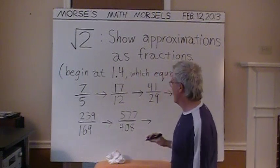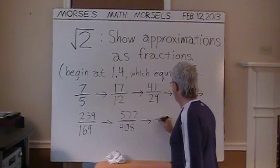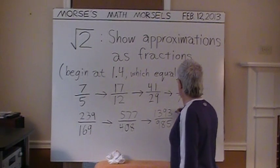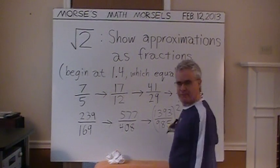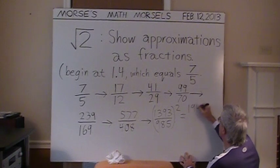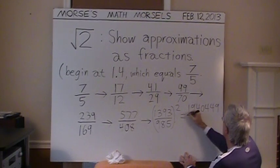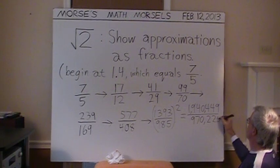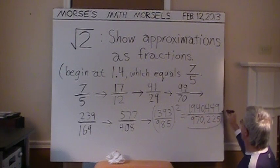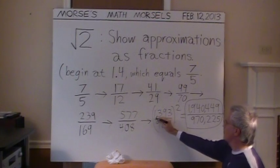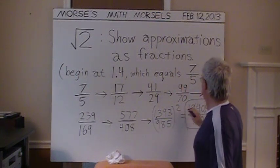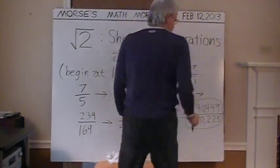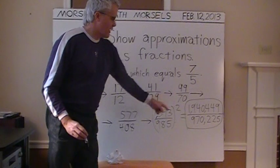Here's the next fraction. I'm just going to do one more to keep all the numbers manageable and under four digits. That's going to be a 985 there, and this is going to be a 1393 up there. If we square this thing, we'll get 1940449 over 970225. Now this is really close to 2. 1393 over 985 is really close to the square root of 2 because if we square it, look how close this top number is to being exactly double the number beneath.